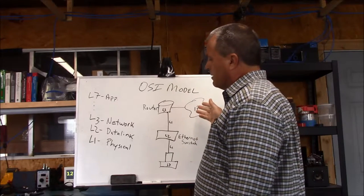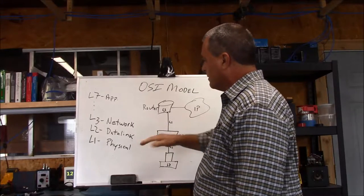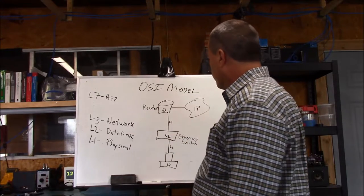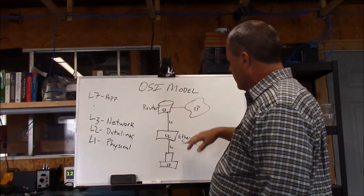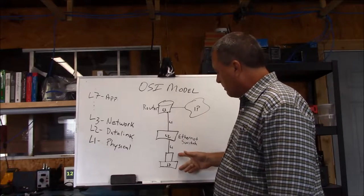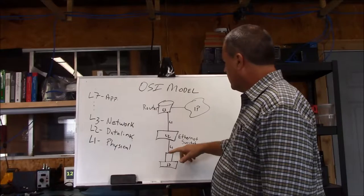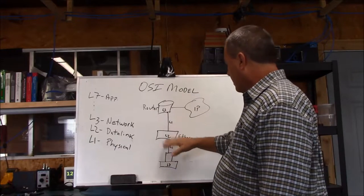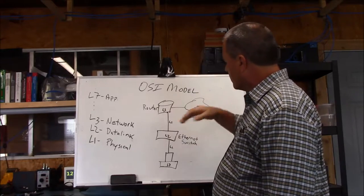But as network engineers, we're usually only concerned with the first three layers, the physical, the data link, and the network. And I drew out a little drawing, and I know not everybody's networks look the same. A lot of people don't even own PCs anymore. They just have wireless devices. They probably don't even have wires. But to show the distinction between the layers, I drew it out.